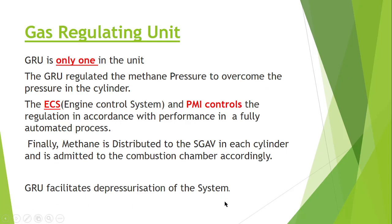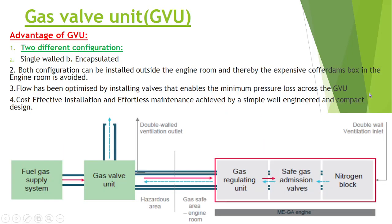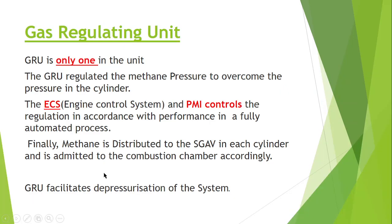The GRU also facilitates the depressurization of the system. After the system is completely shut down, the nitrogen block will activate and facilitate the valves to open so that the system can be purged. For that reason it also facilitates the depressurizing of the system. In summary: the GRU is fitted only one per unit, its main purpose is to regulate the methane pressure to overcome the pressure in the cylinder, it is controlled by ECS and PMI, and it also facilitates depressurization of the system.